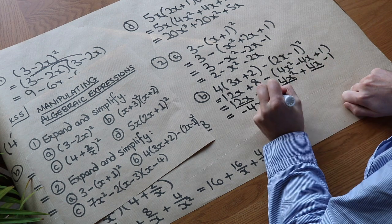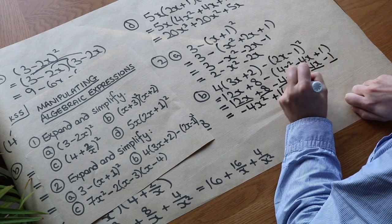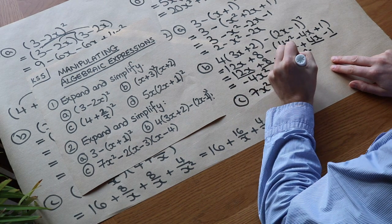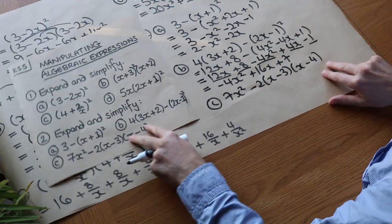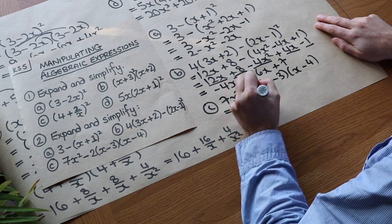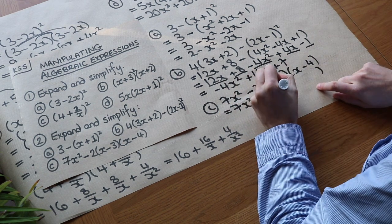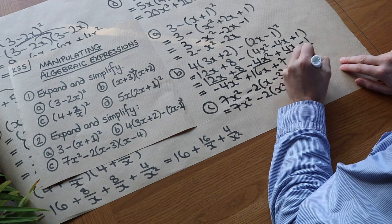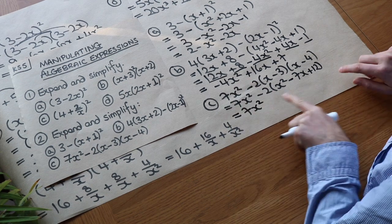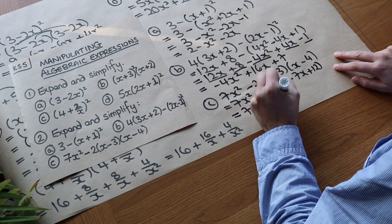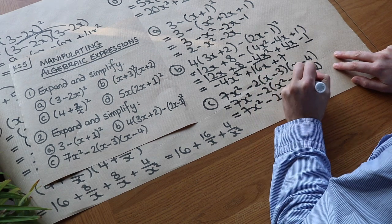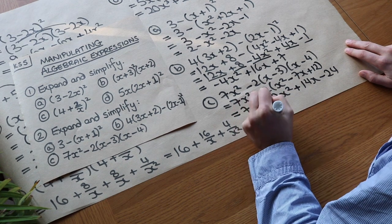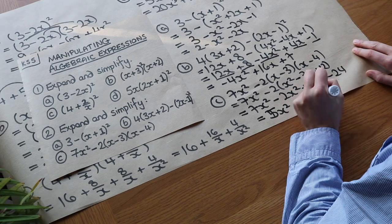Finally: 7x² - 2(x - 3)(x - 4). First expand (x - 3)(x - 4): x² - 3x - 4x + 12 = x² - 7x + 12. Then multiply by -2: -2 times x² is -2x², -2 times -7x is +14x, and -2 times 12 is -24. Adding 7x²: we get 5x² + 14x - 24.